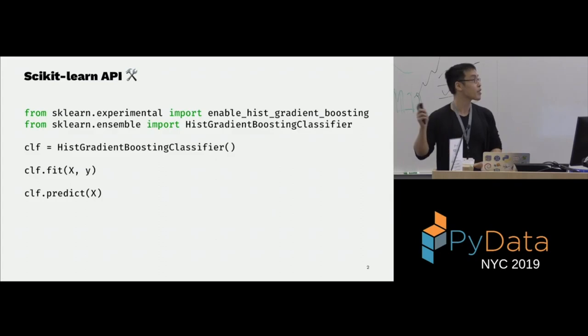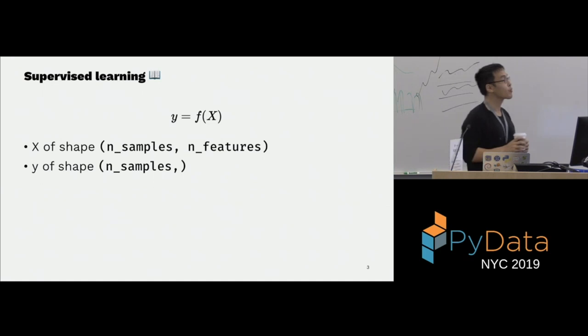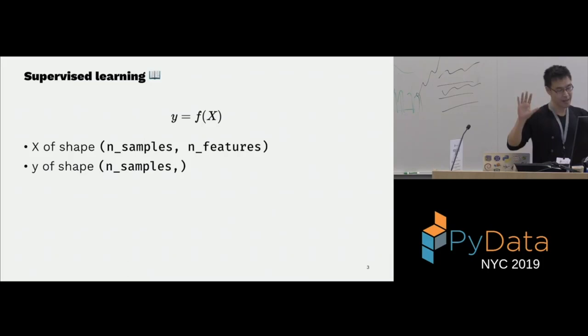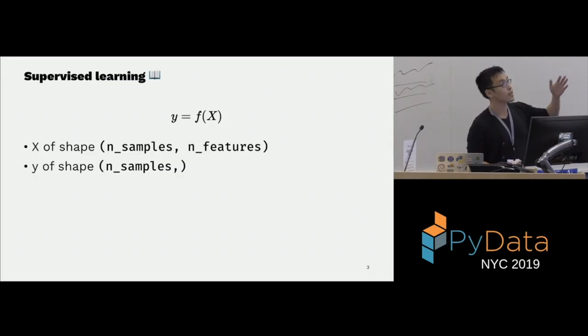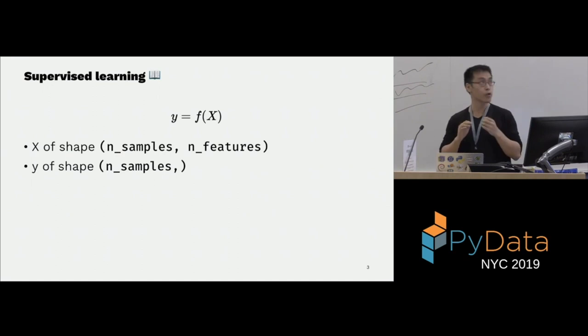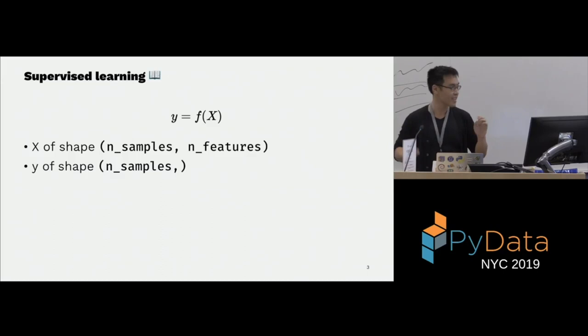Scikit-Learn solves the supervised learning problem where you're given data X and targets Y and you want to figure out what F is. In Scikit-Learn, X is usually a rectangular dataset where you have samples as rows and features as columns. Y is usually n samples — if it's regression, it's floats; if it's classification, it's integers.